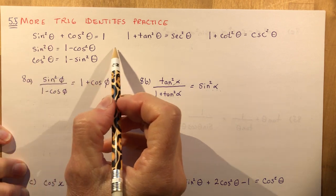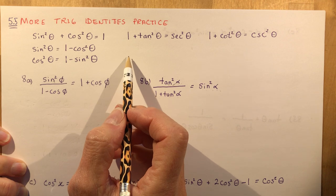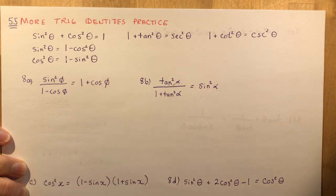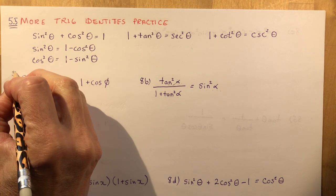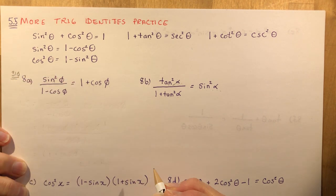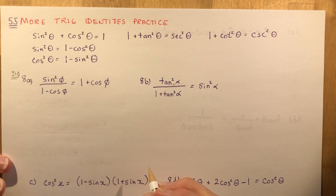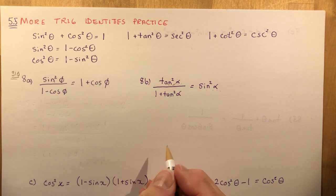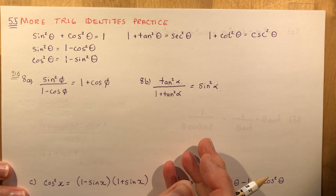I've written up the trig identities you're going to need. These are on page 309 in your textbook, and 8a is from page 310. I'm going to do all the questions from number eight. If you see the steps and have someone explain them, it's so much easier than just floundering around trying to figure things out.